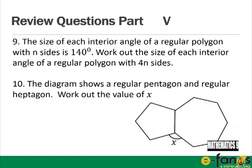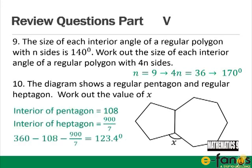Part 5: Each interior angle of a regular polygon is 140°; work out each interior angle of a polygon with 4n sides. Answer: n = 9, so 4n = 36, and each interior angle is 170°. For a regular pentagon and heptagon sharing a side, the value of x = 360 − 108 − 900/7 = 123.4 degrees.